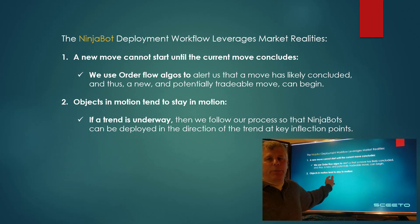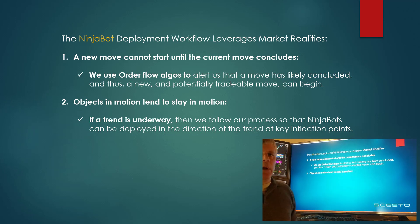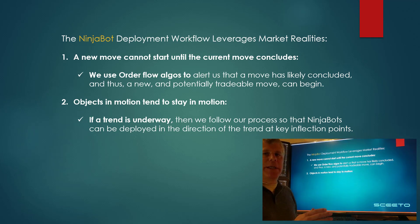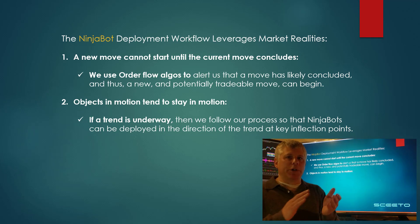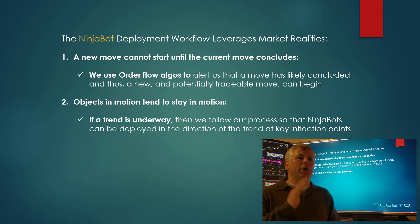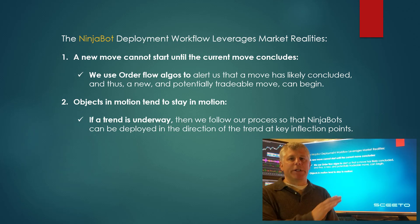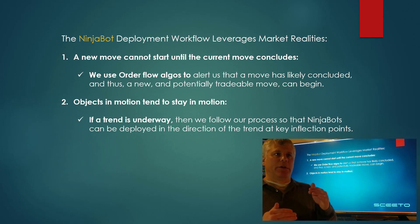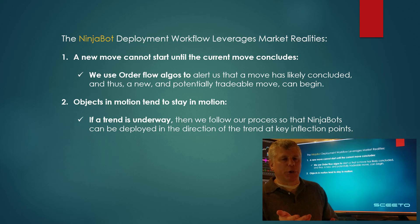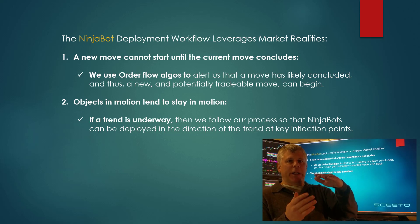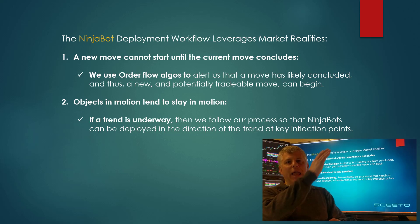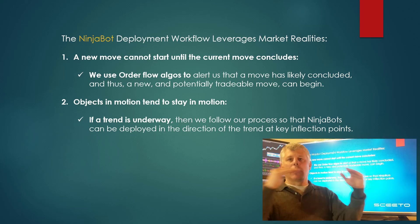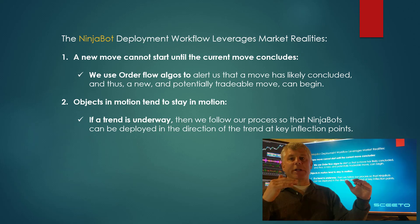The next important salient point in the workflow is that objects in motion tend to stay in motion. In a trend, you'll find multiple opportunities to deploy ninja bots to take advantage of a right shoulder, a breach of the neckline, ABC retracements in the trend, and what we call conclusionary breaches.